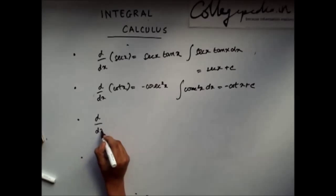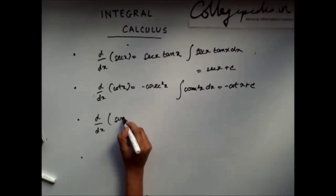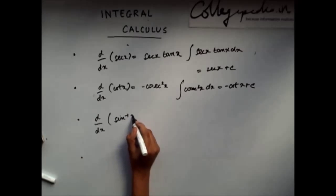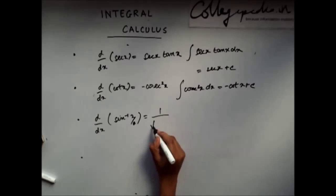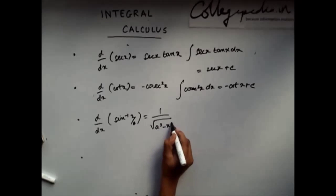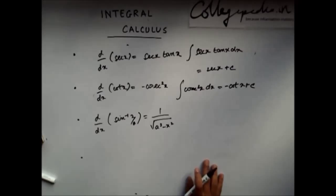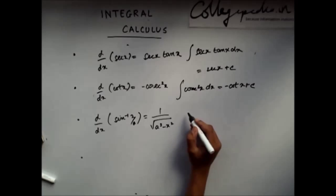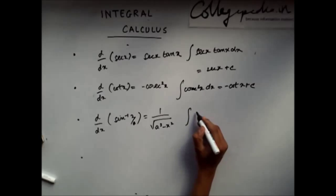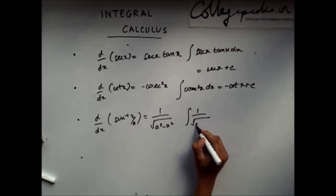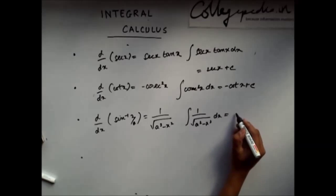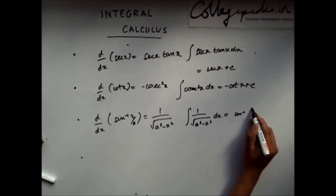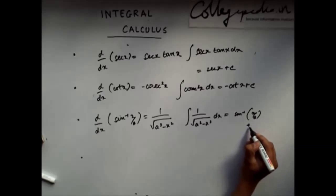If I differentiate sin inverse of (x/a), I get 1 divided by the square root of (a squared minus x squared). So, if I integrate 1 divided by root of (a squared minus x squared), I will get sin inverse (x/a) plus C.